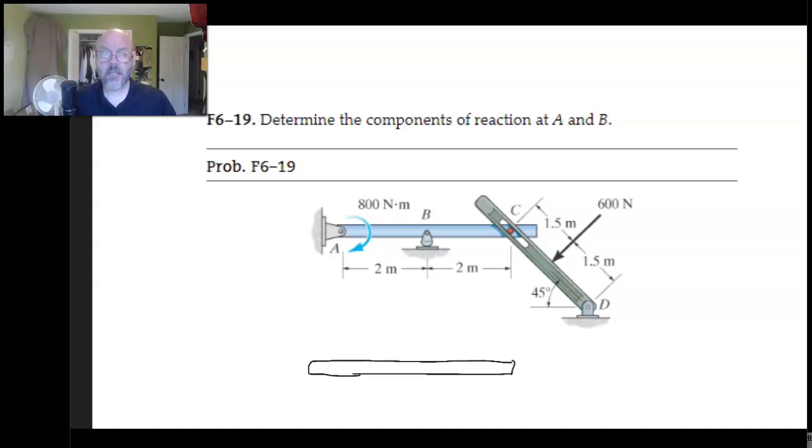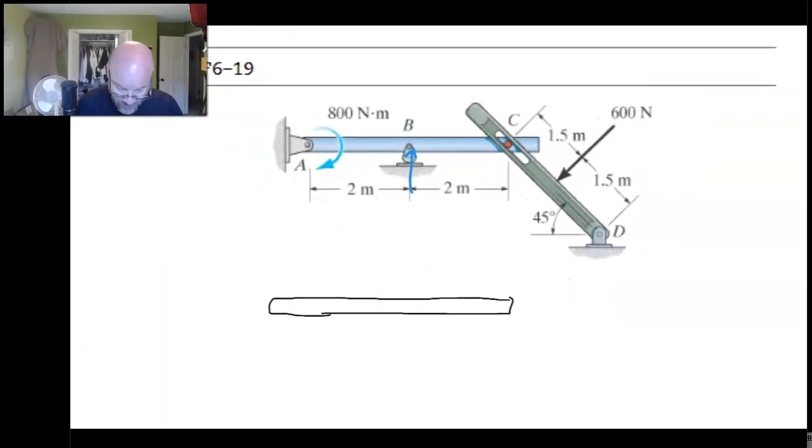Okay, anyway, here we go. So let's start with the ABC beam, the horizontal one there. B is going to have to be up, okay, because it's a rocker and there are no other options except for it to be up. So there's B.